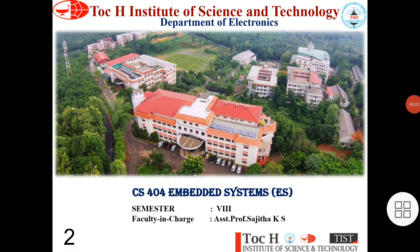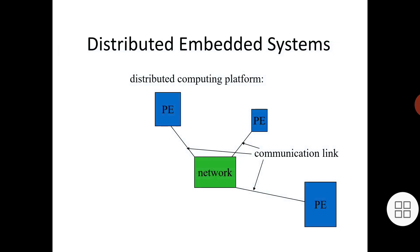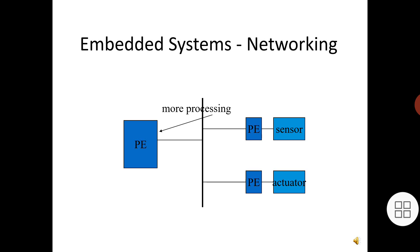Dear students, we are moving on to the sixth module, which mainly concentrates on embedded system networks. The first topic is distributed embedded architectures. In a distributed embedded system, several processing elements (PEs), either microprocessors or ASICs (application-specific integrated circuits), are connected by a network that allows them to communicate. The applications are distributed over the PEs, and some processing is done at each node. Here you can see two PEs for initial processing — one for sensor and another for actuator — and another PE for more processing that coordinates the overall process.